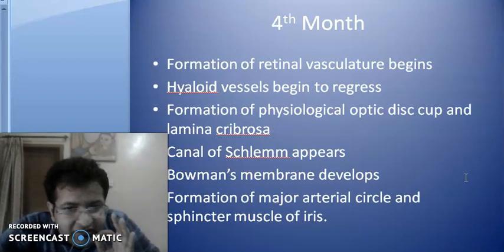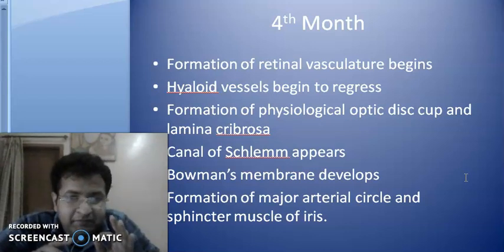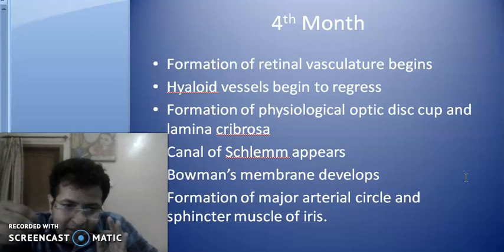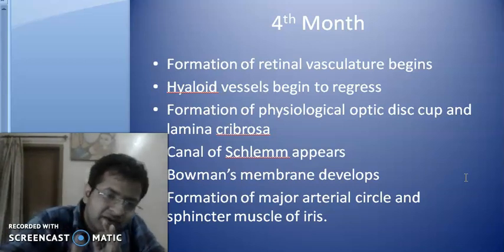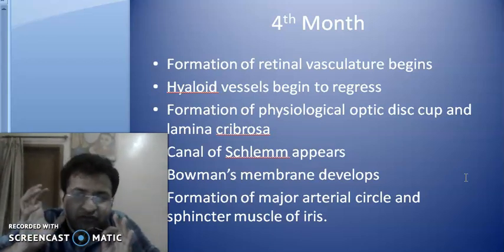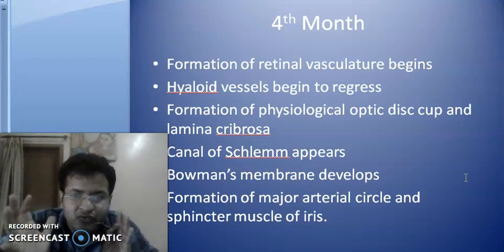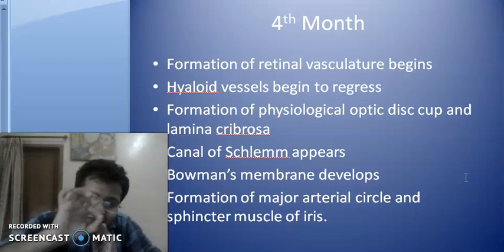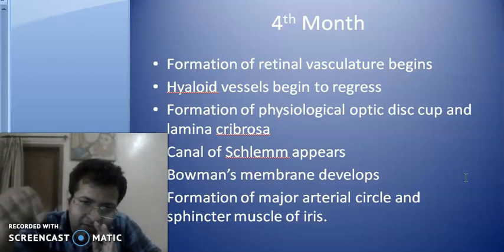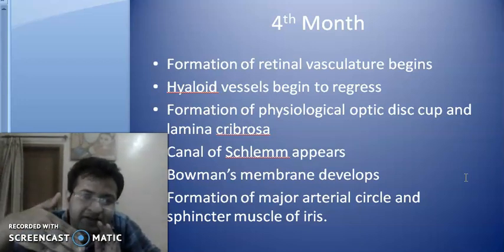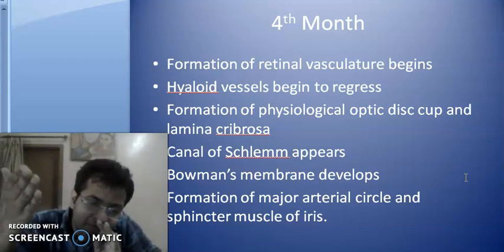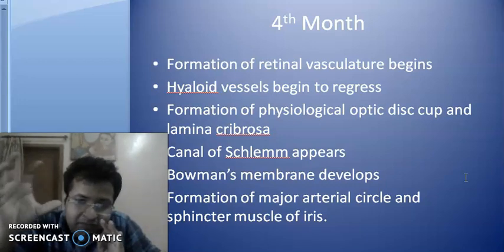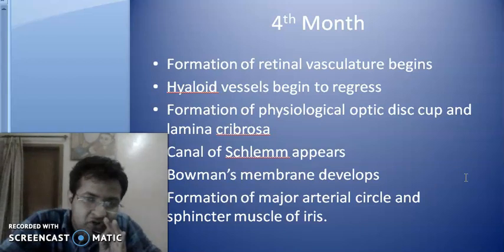At the fourth month of gestation, the formation of the retinal vasculature begins. The hyaloid vessels, which are part of the primary vitreous derived from vascular mesenchyme that entered through the embryonic fissure, begin to regress anteriorly towards the lens. There is also formation of the physiological optic disc cup and lamina fibrosa. The canal of Schlemm appears in the trabecular meshwork around the cornea. Bowman's membrane — a thickening of the anterior stromal part — develops at the fourth month. There is also formation of the major arterial circle and the sphincter muscles of the iris.